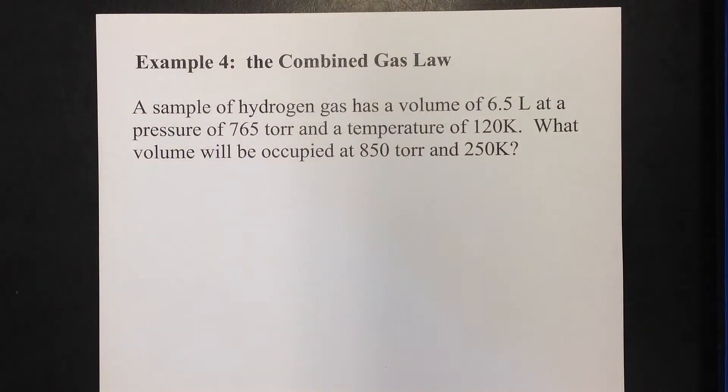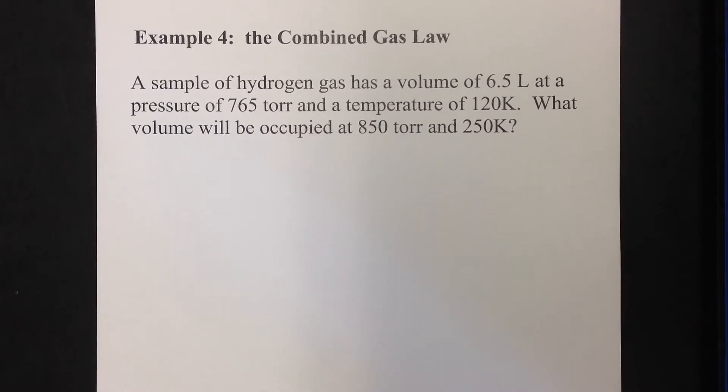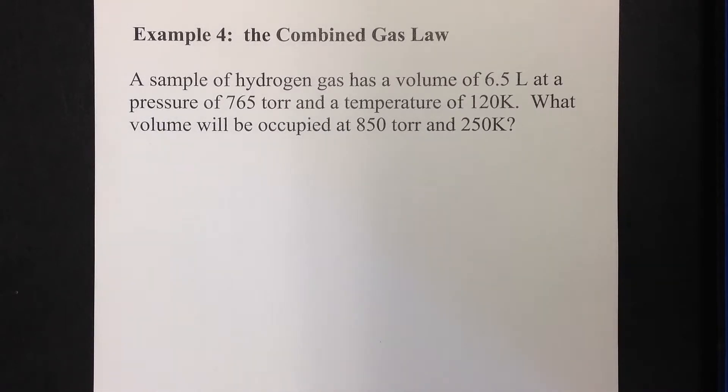Now let's take a look at this first example. A sample of hydrogen gas has a volume of 6.5 liters at a pressure of 760 torr and a temperature of 120 Kelvin. What volume will be occupied at 850 torr and 250 Kelvin? Something you notice that's a little bit different about this problem - nothing's constant. It looks like everything is changing. But it is possible to have a sample of gas that is changing in pressure, temperature, and volume. When all of those things are changing, it's a little harder to anticipate what your answer should be at the end, but it's still just as easy to plug the numbers in to get the answer.